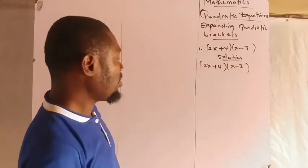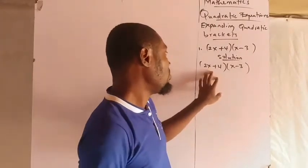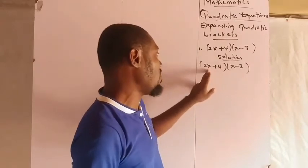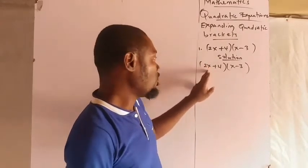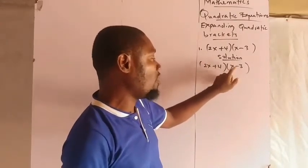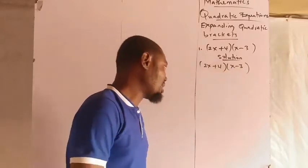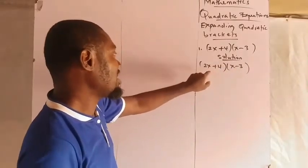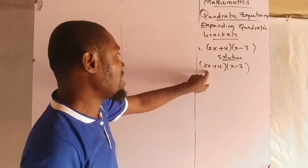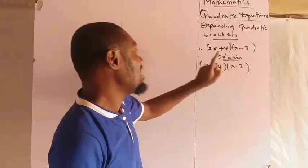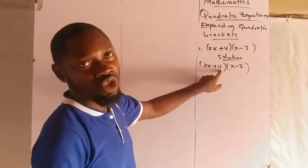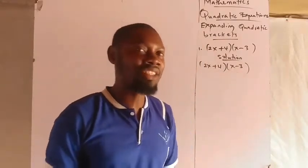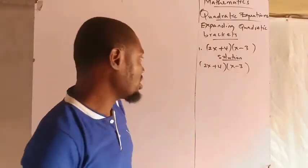If you are using the first bracket as a multiplier and the second as a multiplicand, then each of the terms in the multiplier will be used to multiply each term in the multiplicand. So I'll take the 2x to multiply all we have in the second bracket, and I'll also take the 4 to multiply all we have in that bracket, then deal with the algebra to get the final result.